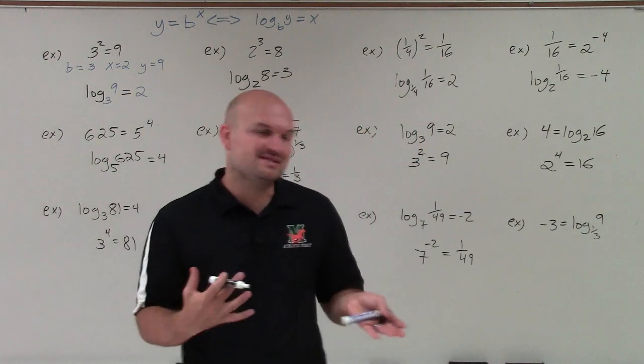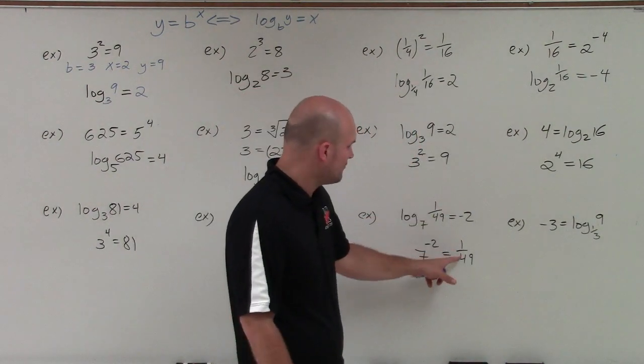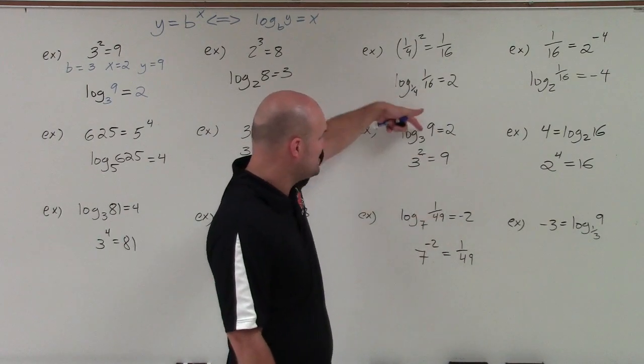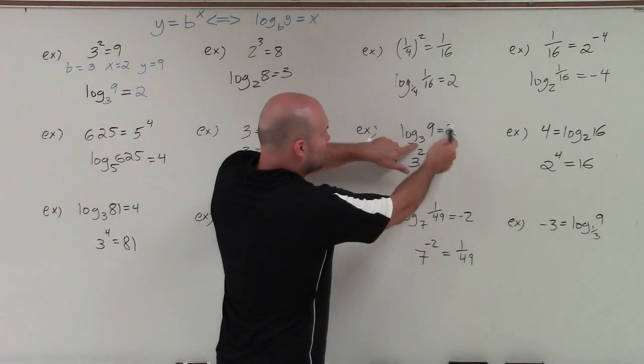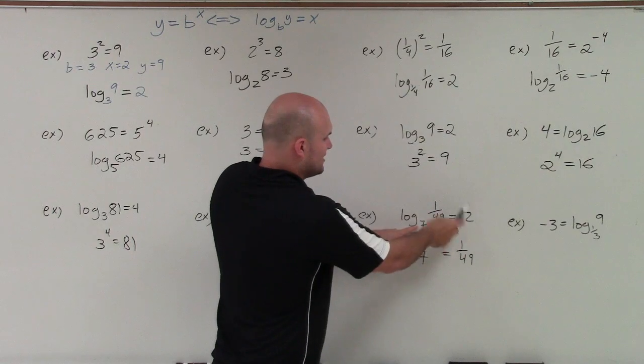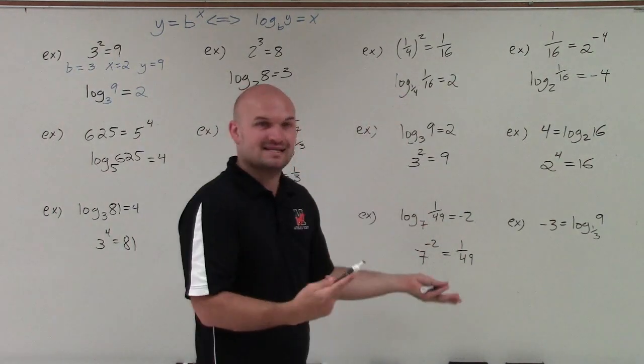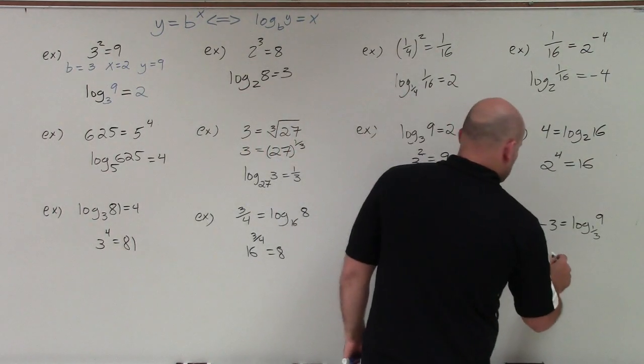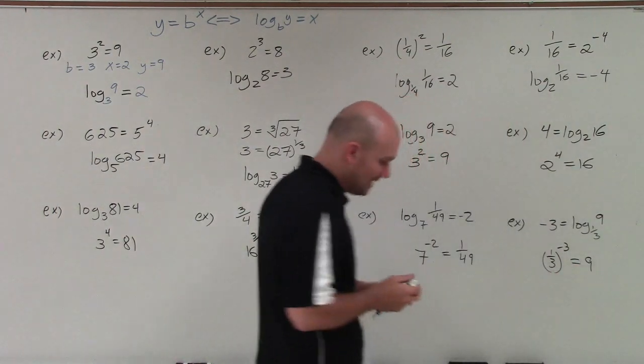And again, just notice I'm doing the same problem. It doesn't matter if I have negative and rational numbers, or if I'm just doing this. It's 3 to the 2nd power equals 9. 7 to the negative 2nd power equals 1 over 49. It's the exact same process. Over here, this one's going to be the base is 1/3, raised to negative 3 equals 27.